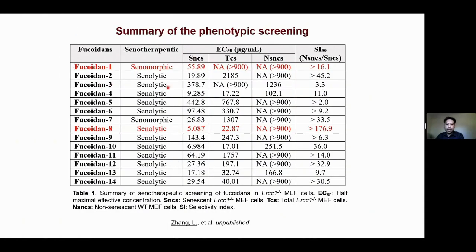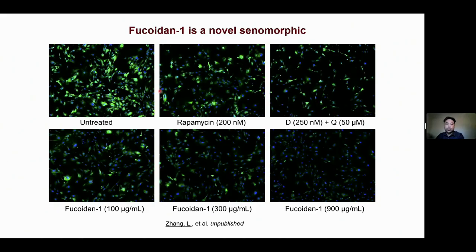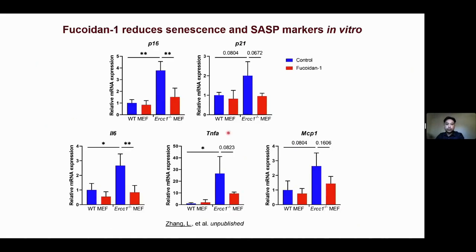The best senomorphic and senolytic fucoidins were selected for animal studies. As shown here, fucoidin one is a senomorphic — it can reduce senescent cells in a dose-dependent manner without reducing total cell number. Fucoidin one also selectively reduced senescence and SASP factors at the transcript level, such as p16, p21, IL-6, TNF-alpha, and MCP1 in senescent cells.